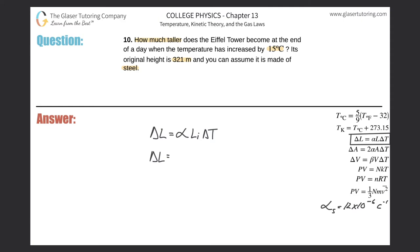The coefficient of thermal expansion for steel is 12 times 10 to the minus 6, multiplied by the initial length which is 321, multiplied by the 15 degrees celsius.